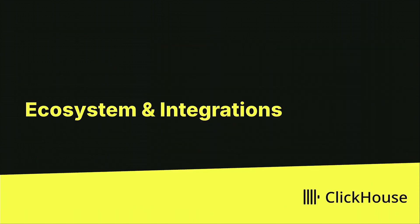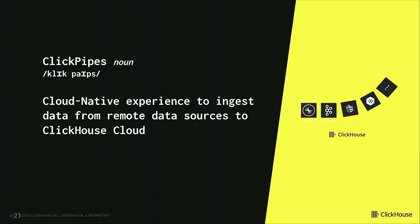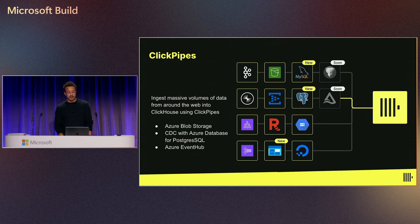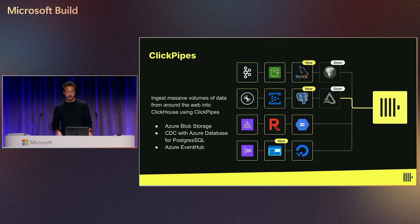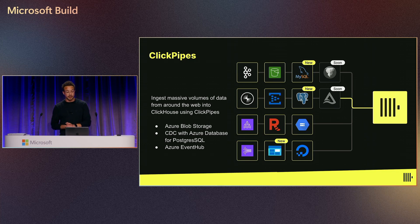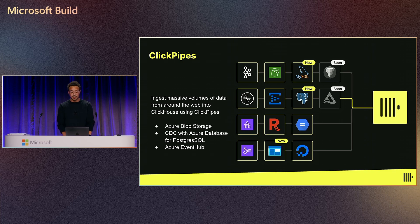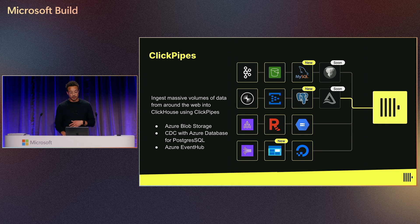I'm going to touch on ecosystems and integrations. We have ClickPipes, which is our cloud-native experience to ingest data from remote data sources around the cloud. ClickPipes is really easy to set up — you select your data source, configure the schema and destination, and you can create a ClickPipe via the UI or programmatically using Terraform or our API. Because ClickHouse is really fast, ClickPipes is built to handle that volume and speed. We take care of building and scaling these efficient pipelines for you, accelerating your time to production. ClickPipes supports object storage like Azure Blob Storage, PubSub like Event Hub and Confluent, and we recently released CDC pipelines for Postgres or MySQL databases to keep transactional and analytical use cases in sync.